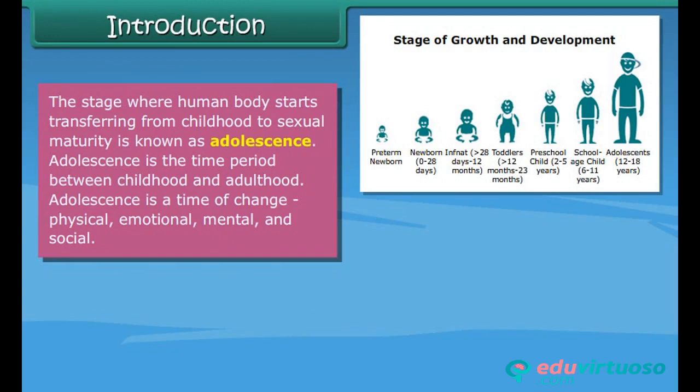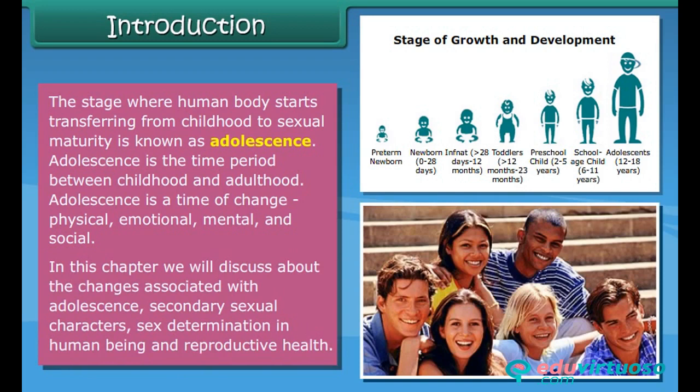The stage where the human body starts transferring from childhood to sexual maturity is known as adolescence. Adolescence is the time period between childhood and adulthood — a time of change: physical, emotional, mental, and social. In this chapter, we will discuss the changes associated with adolescents, secondary sexual characters, sex determination in human beings, and reproductive health.